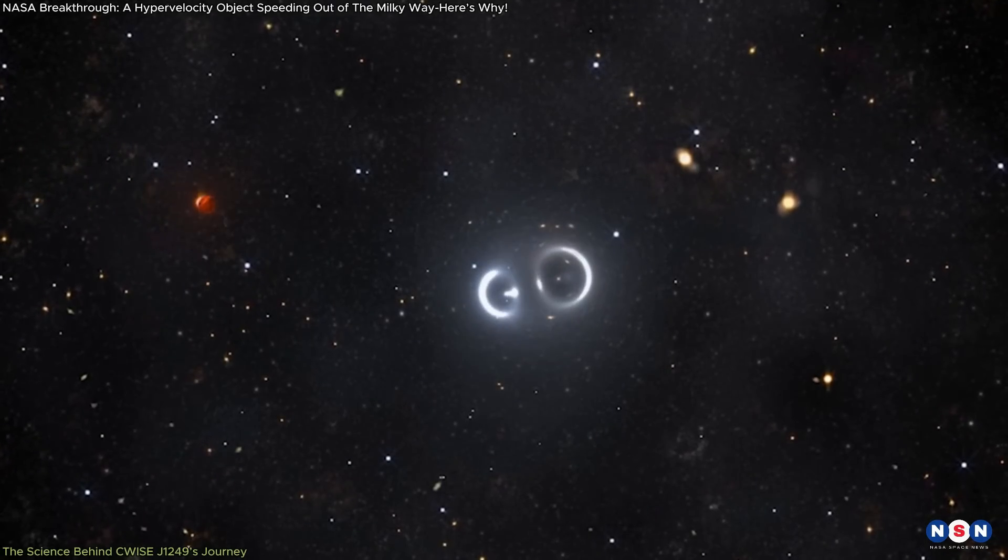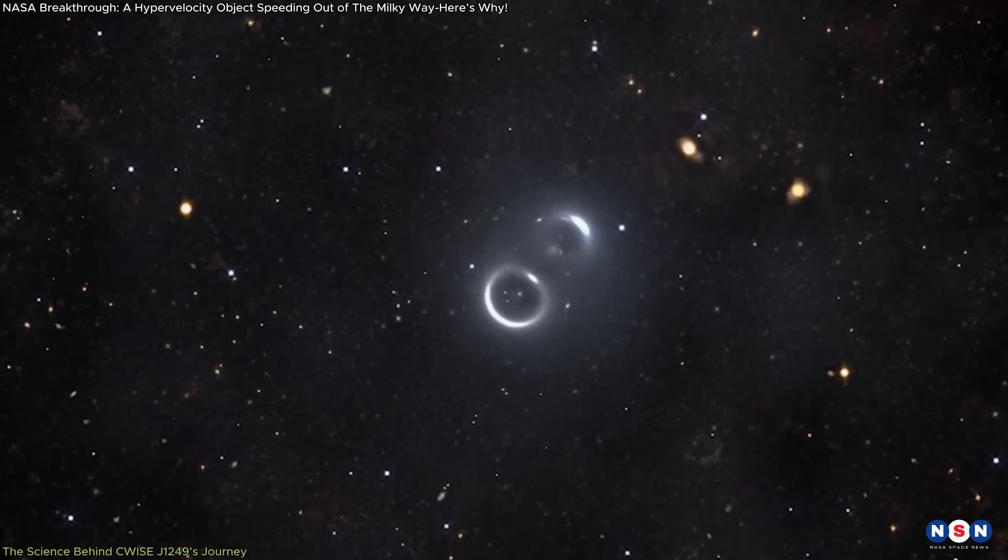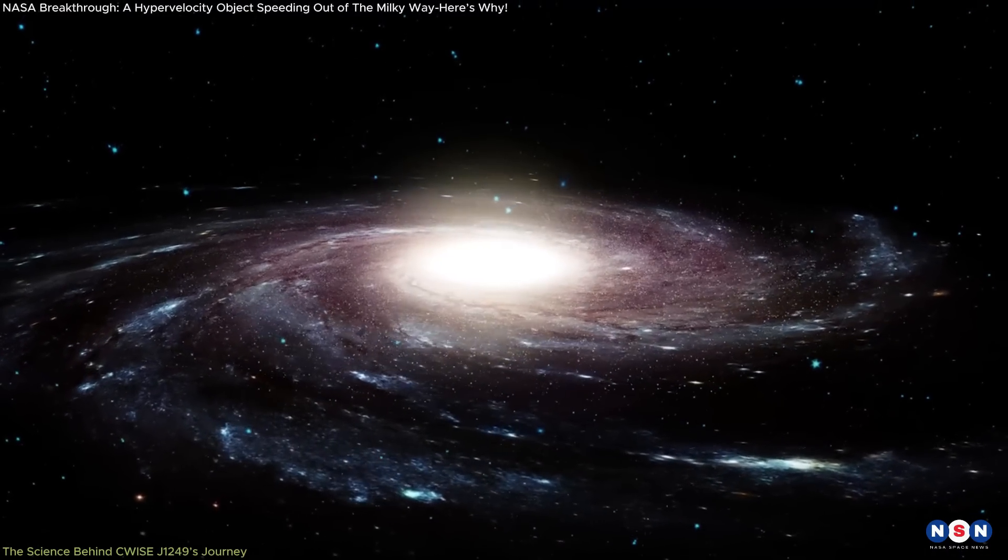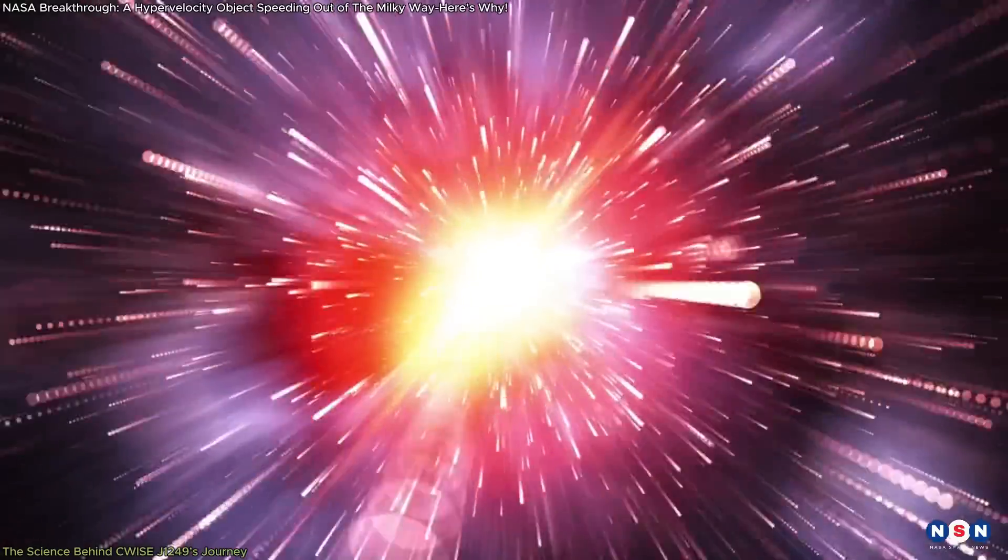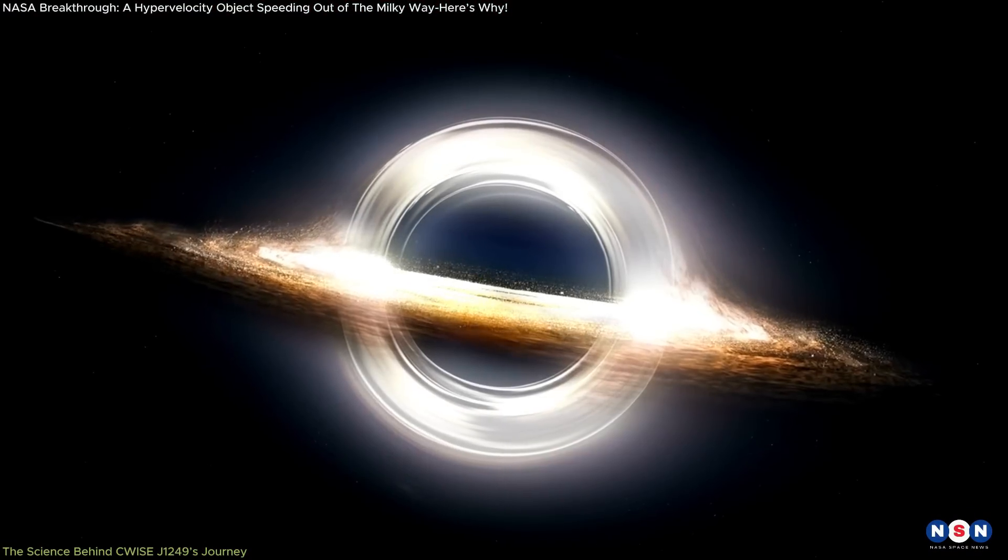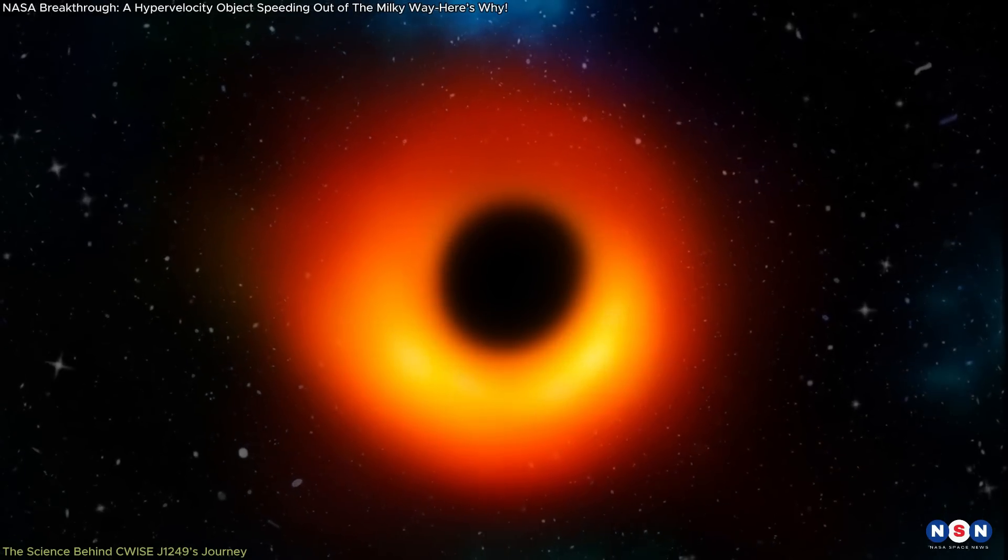Hypervelocity objects are typically stars or remnants of stars that are traveling at such high speeds that they are on the verge of escaping the gravitational pull of their galaxy. These objects were first discovered in the early 2000s and are often linked to interactions with supermassive black holes, such as Sagittarius A star, the black hole at the center of the Milky Way.